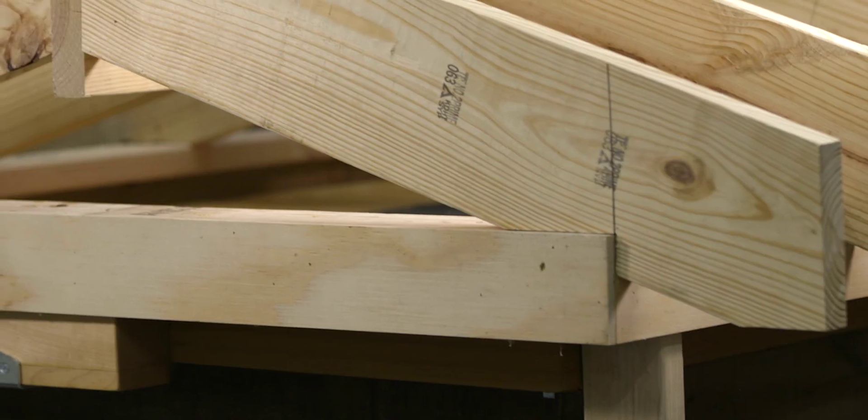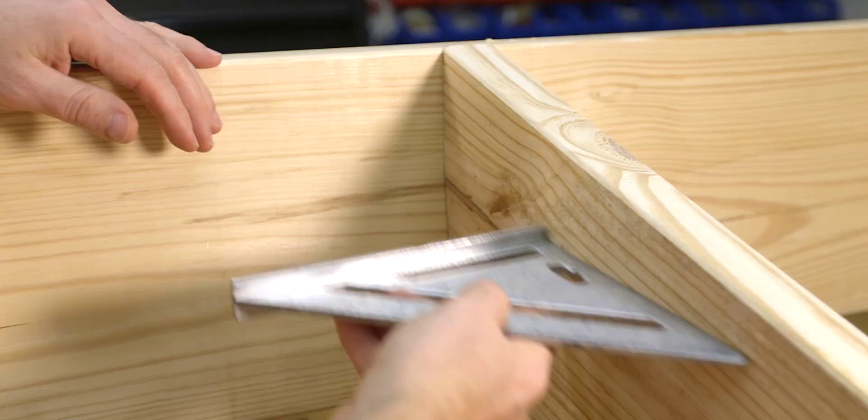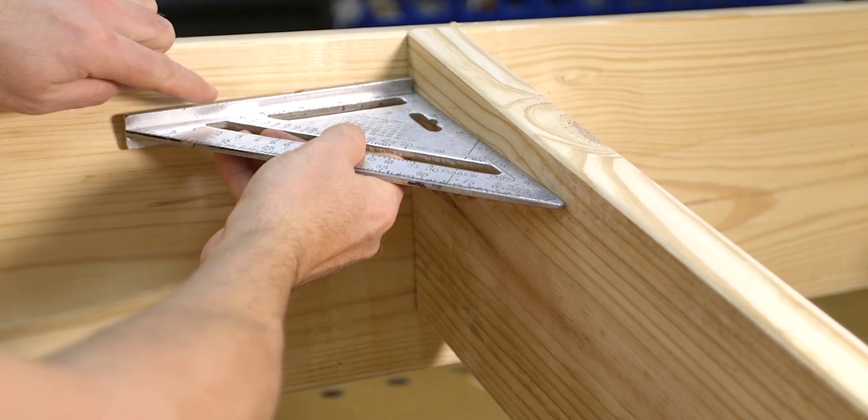Today we're learning how to lay out and cut common rafters using a framing square and two simple equations. Gable roofs like our mock-up here are made up of common rafters, which are rafters that come 90 degrees off the ridge board.